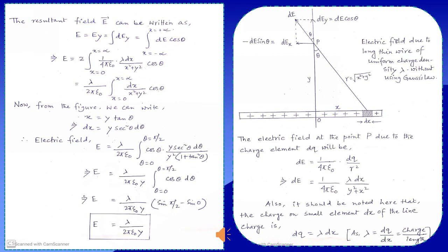In place of x² + y² we write y²(1 + tan²θ), taking y² as common. The y² terms cancel out, and outside the integration 1/y remains. The integral becomes ∫₀^(π/2) cosθ dθ. Since the integration of cosθ is sinθ, after substituting the upper and lower limits we obtain the final expression.